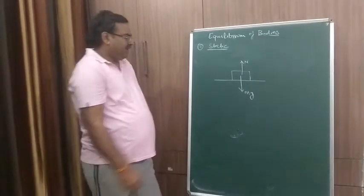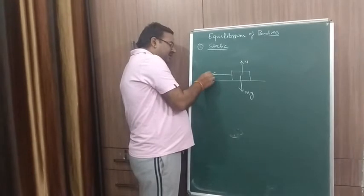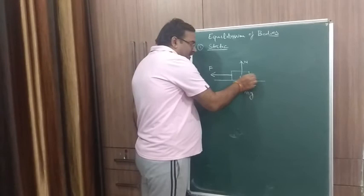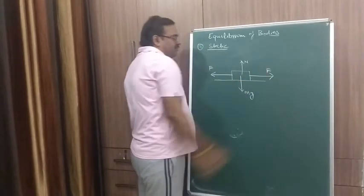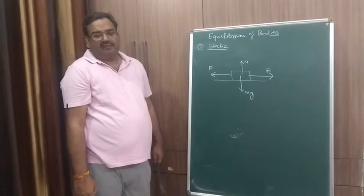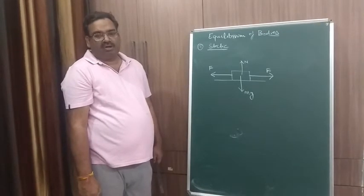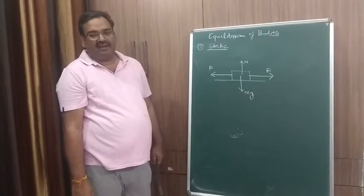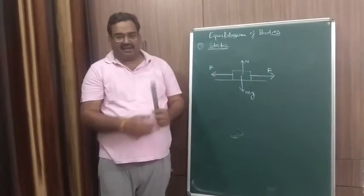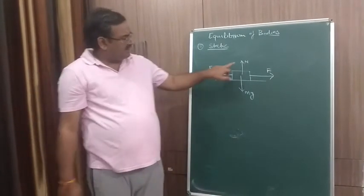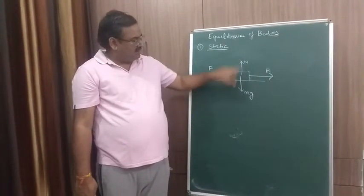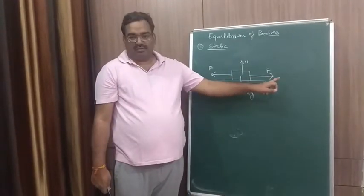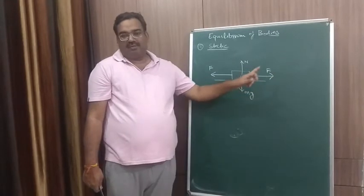Same way, if I start pulling this force by the force F and another person pulls the same book with the same equal and opposite force, where will the book go? It will not move. That is what is acting in two, or the two forces are equal and in opposite direction. The body will again remain at rest. So we can see that all the forces that are acting upward is balancing the downward force. Left force is being balanced by the right force. These are the examples of static equilibrium.